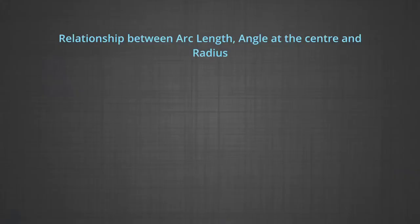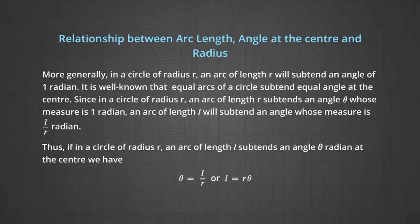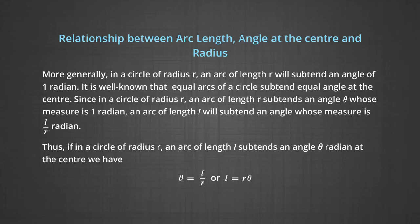Lastly, we are going to study the relationship between the arc length, angle at the centre and radius. In a circle of radius r, an arc of length r will subtend an angle of 1 radian. It is well known that equal arcs of a circle subtend equal angles at the centre. Since in a circle of radius r an arc of length r subtends an angle of 1 radian, an arc of length l will subtend an angle whose measure is l/r radians. Thus, if in a circle of radius r an arc of length l subtends an angle theta at the centre, then theta equals l/r, or l equals r·theta.